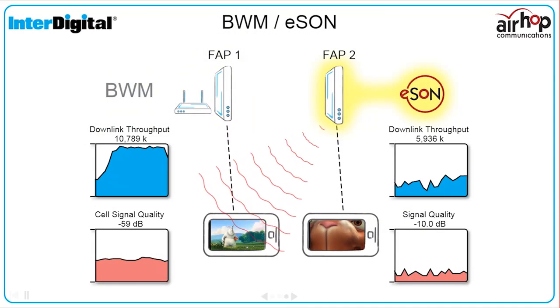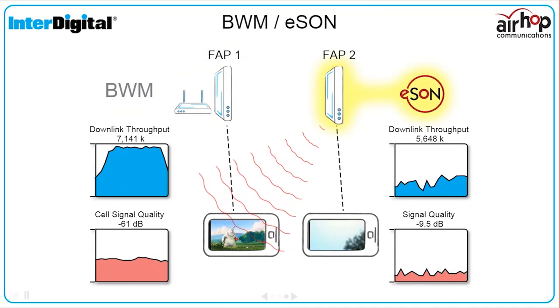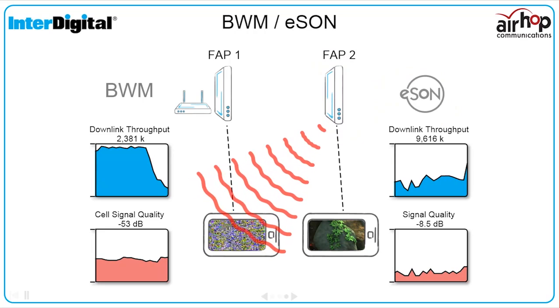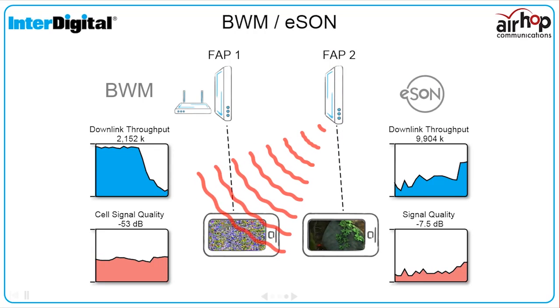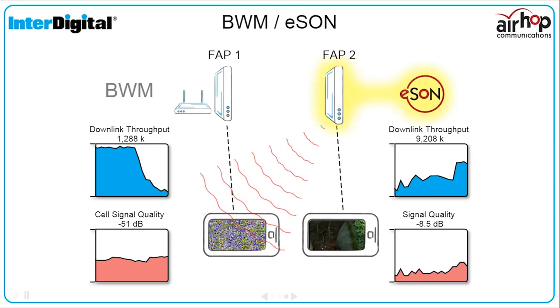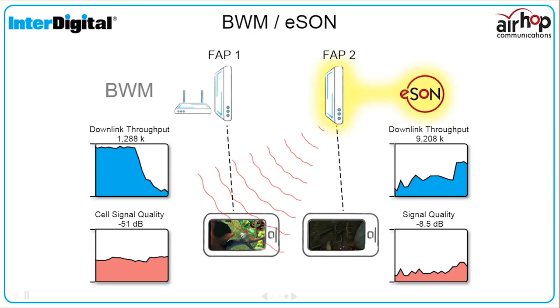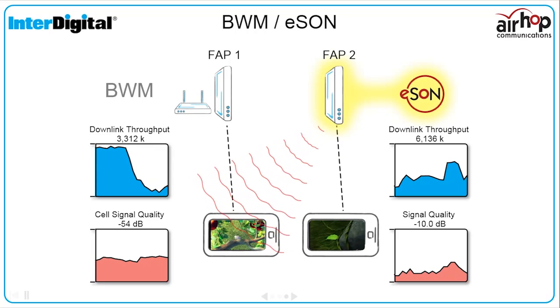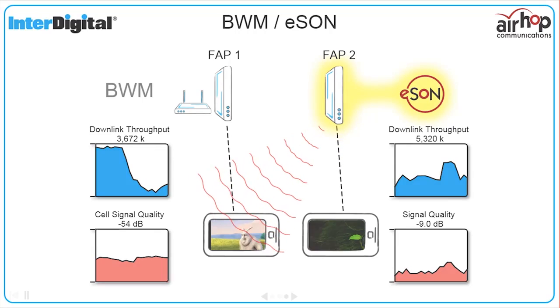InterDigital's bandwidth management and AirHop's eSAN allow wireless systems to optimize the capacity and quality of service in densely deployed Wi-Fi and cellular networks.